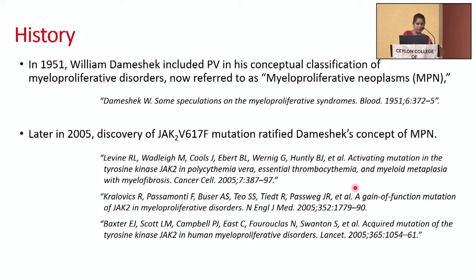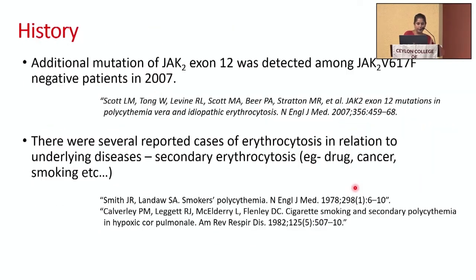There are many papers and articles on the discovery of JAK2, and I have given some references here. In 2007, an additional mutation in JAK2 — exon 12 — was detected. Almost 95% of polycythemia vera patients had the JAK2 V617F mutation, but there were 5% of people who had the morphology and clinical picture similar to polycythemia vera yet did not have the typical JAK2 V617F mutation. Gene sequencing of the JAK2 gene revealed the exon 12 mutation in these cases.